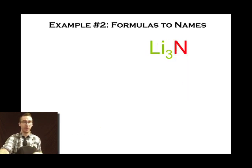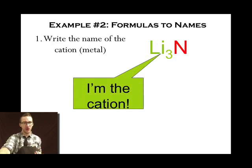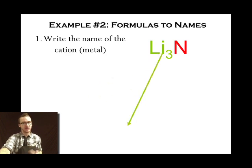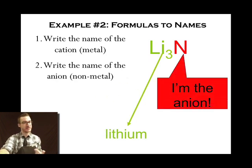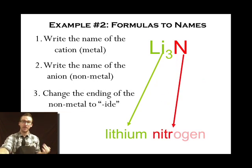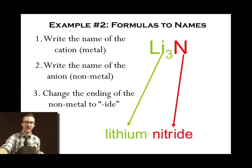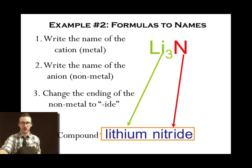You want another example? Sure. First step, write the name of the cation. In this case, our cation is lithium. Step two, write the name of the anion. In this case, our anion is nitrogen. Step three, don't forget, change the ending of that non-metal anion to IDE. So my final compound name here, lithium nitride.